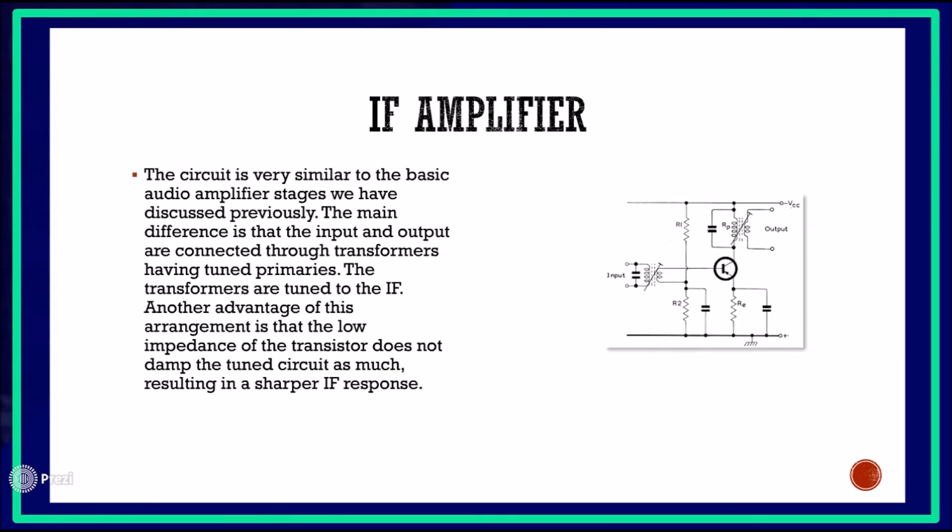The IF amplifier circuit is very similar to basic audio amplifier stages. The main difference is that the input and output are connected through transformers having tuned primaries. The transformers are tuned to the intermediate frequency. An advantage of this arrangement is that the low impedance of the transistor does not dampen the tuned circuit as much, resulting in a sharper IF response.